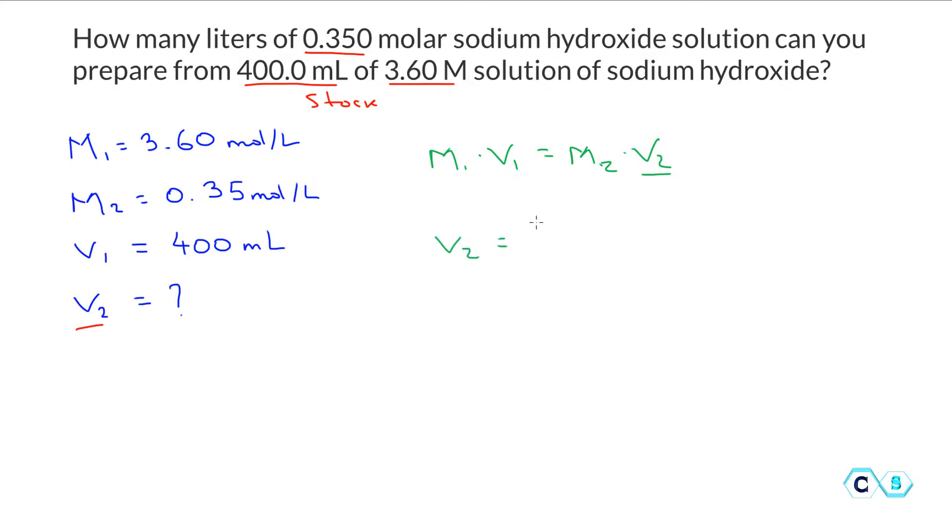V₂, if we just rearrange this equation a little bit, is equal to M₁ multiplied by V₁, and we're going to divide this by the final concentration of the solution.